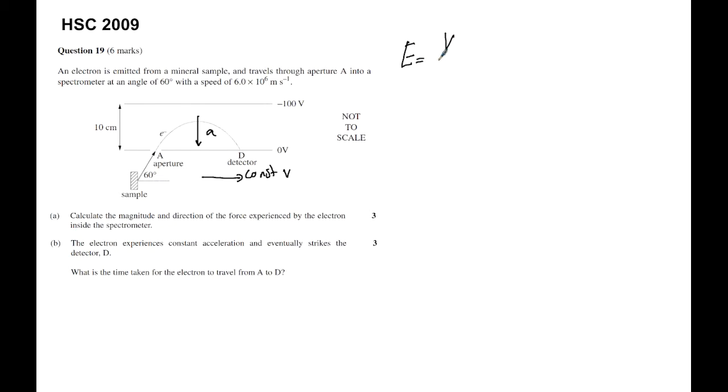First of all, we need to know that an electric field is set up. An electric field is set up by doing the voltage over the distance. In your formula sheet, if you're doing the HSC, the formula is written like this.